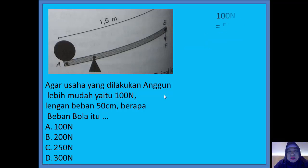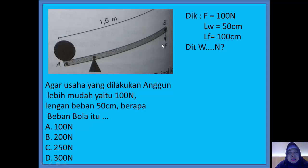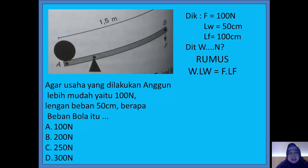Bagaimana cara menjawabnya? Kita lihat diketahui. Kuasa Anggun F adalah 100 Newton. Lengan beban LW adalah 50 cm. LF-nya berapa? Karena dari A sampai B panjang galah atau tuasnya 1,5 meter sama dengan 150 cm, dikurang 50. Jadi dari titik tumpuh ke F atau LF adalah 100 cm — yaitu 150 kurang 50, jadi 100 cm. Oke, berapakah beban bola? Kita lihat dicari W. Rumusnya sama: W kali LW sama dengan F kali LF.